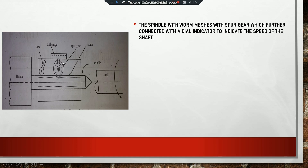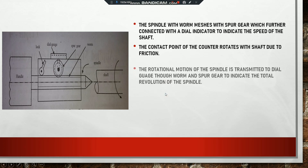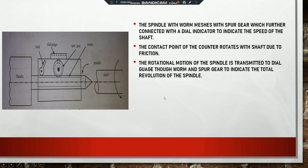The contact point of the counter rotates with the shaft due to friction. This contact point — the spindle — starts to rotate due to friction generated between the conical head and the shaft. The rotational motion of the spindle is then transmitted to the dial gauge.